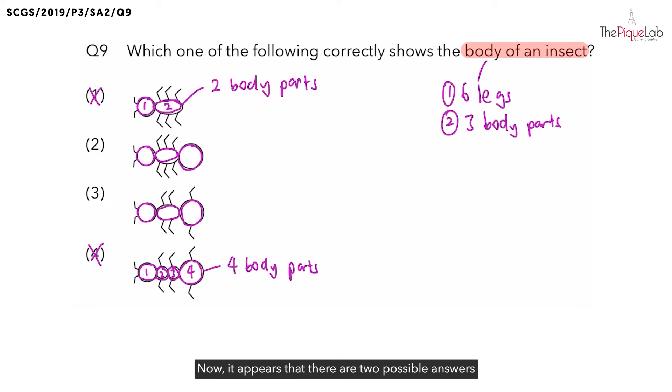Now it appears that there are two possible answers for this question, but one of the options must be wrong. Now which option is the wrong one? To answer this, we need to first understand more about how the body of an insect looks like. So when we draw it out, we know that all insects have three body parts.